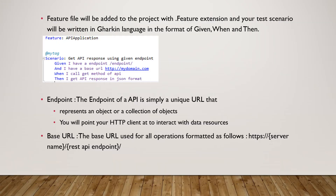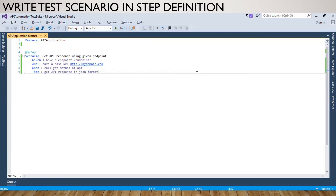So the feature file will be added to the project with the .feature extension and your test scenario will be written in Given/When/Then format. The endpoint is simply a unique URL that represents an object or a collection of objects - you point your HTTP client at it to interact with data sources and resources. The base URL is used for all operations, formatted as HTTP server name then slash REST API endpoint.